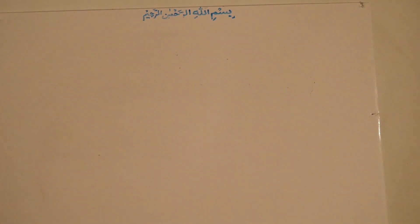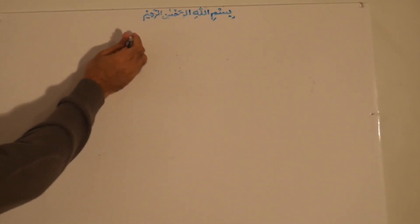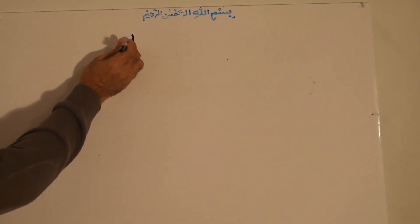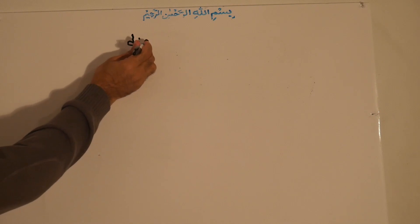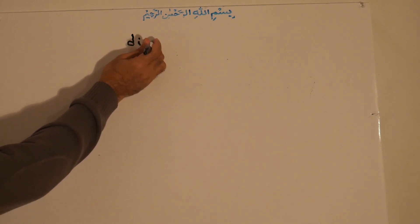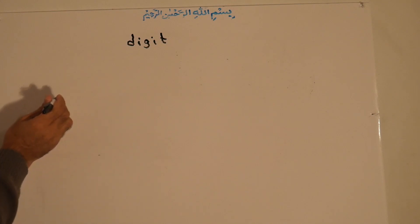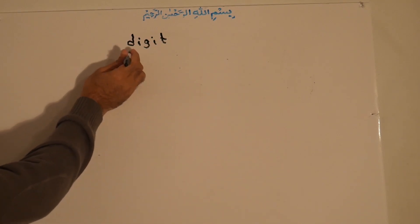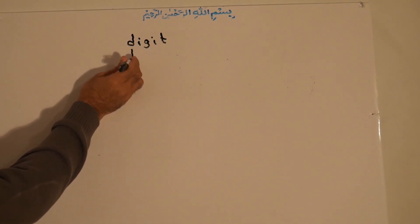This is the number sense. Now we know the number. Now let us discuss about the digit. What is a digit? Digit is a singular word. The plural of digit is digits.